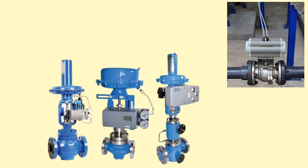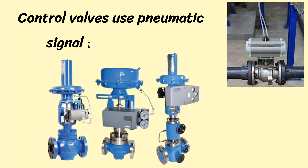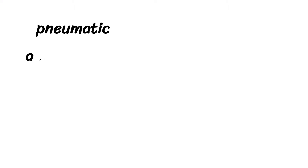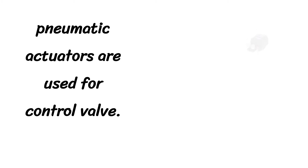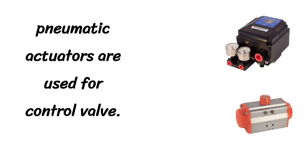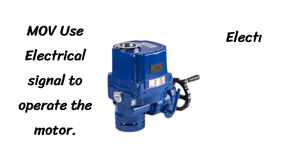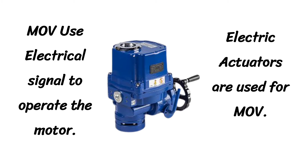Control valves use pneumatic signals for operation. Pneumatic signals are shown by the circle shown in the diagram. Pneumatic actuators are used for control valves, and various pneumatic actuators are shown in the images. MOV uses electrical signals to operate the motor — meaning electric actuators are used for motorized valves.